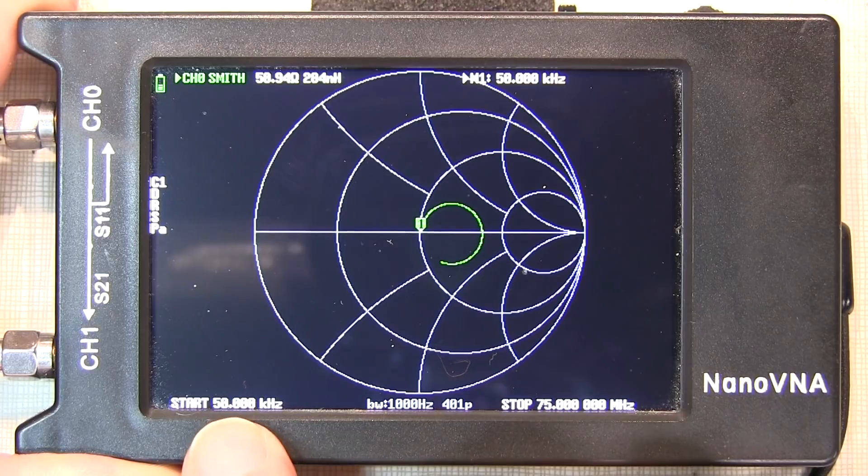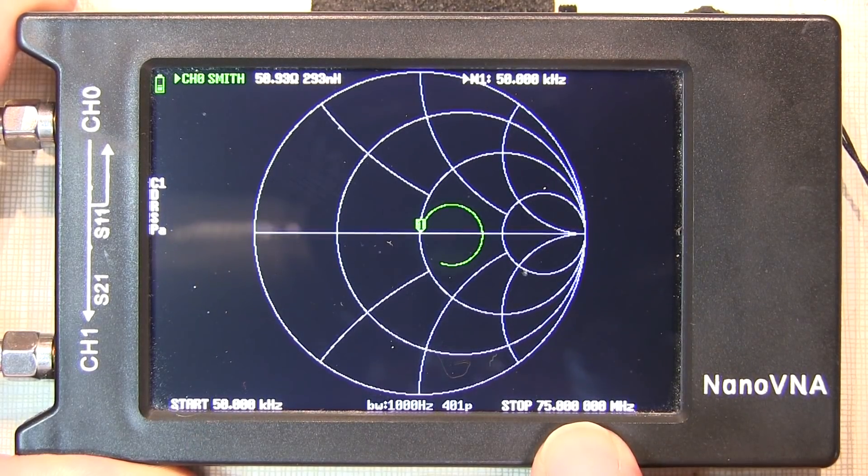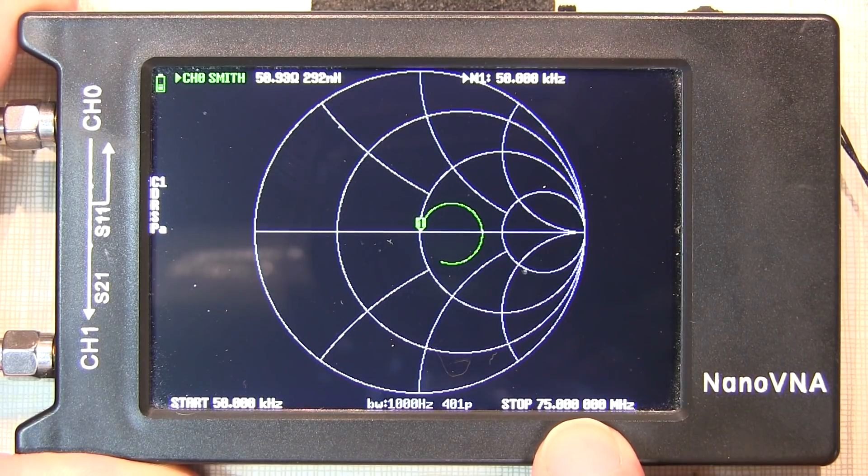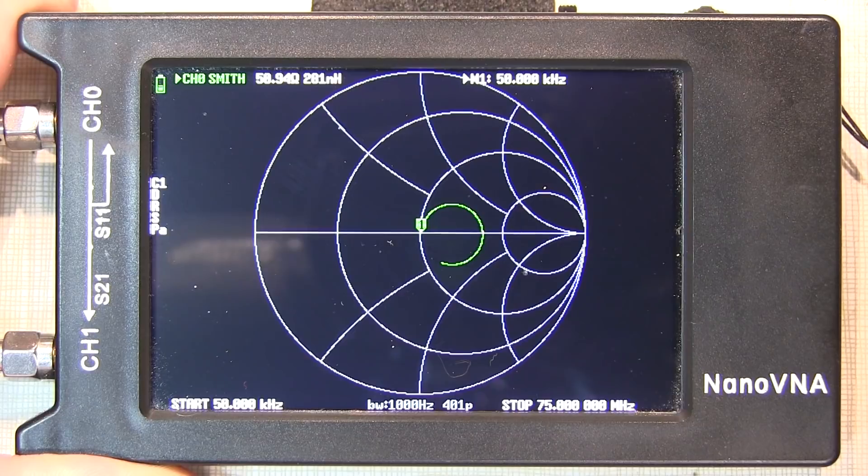Okay, so I've set the start frequency to 50 kilohertz. I've set my stop frequency to 75 megahertz. I've removed all of the traces except the Smith chart, and I've run through an open, short, and load calibration.